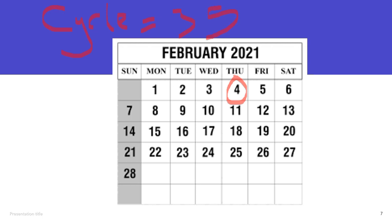It is very important that you determine the length of your cycle, because it is when you know the duration of your cycle — whether it is 35, 21, or 28 days — that you will be able to determine your ovulation period, as we are going to explain shortly.